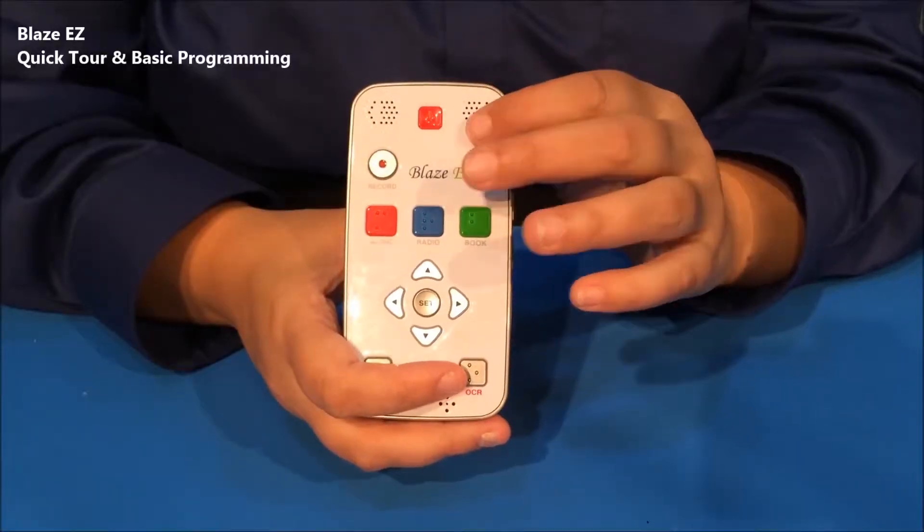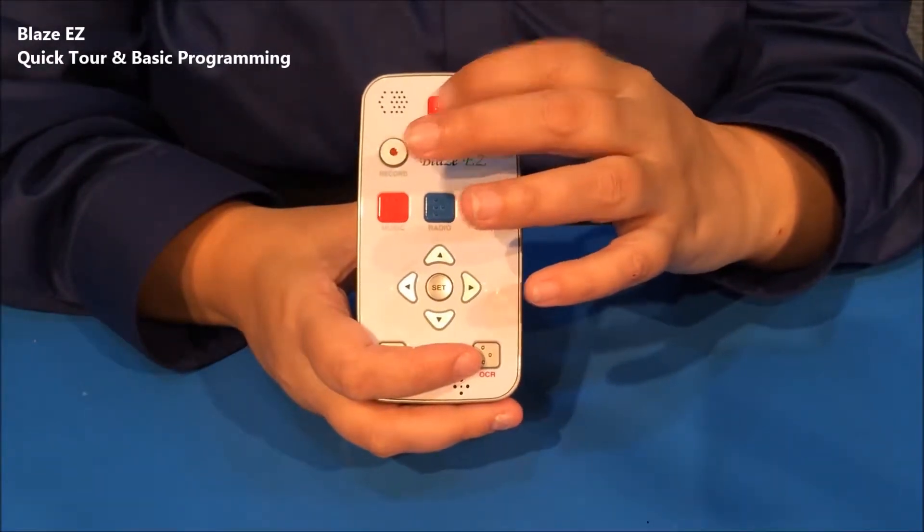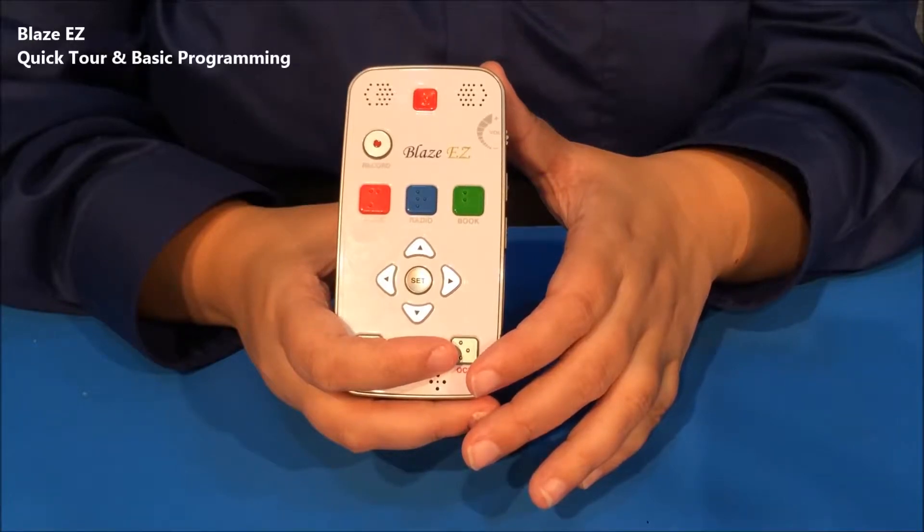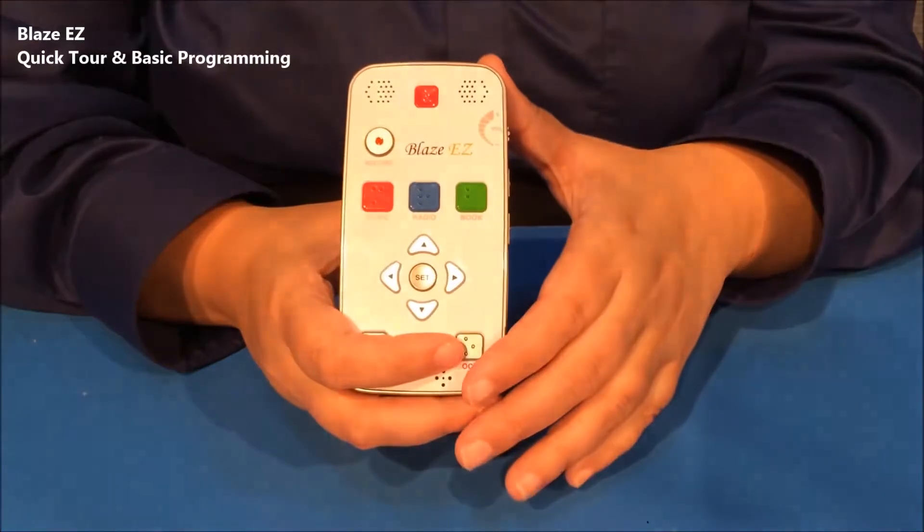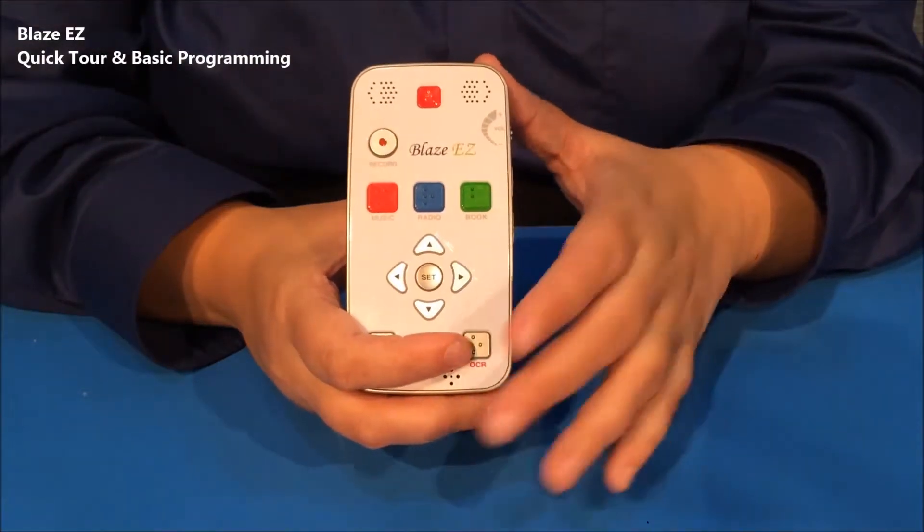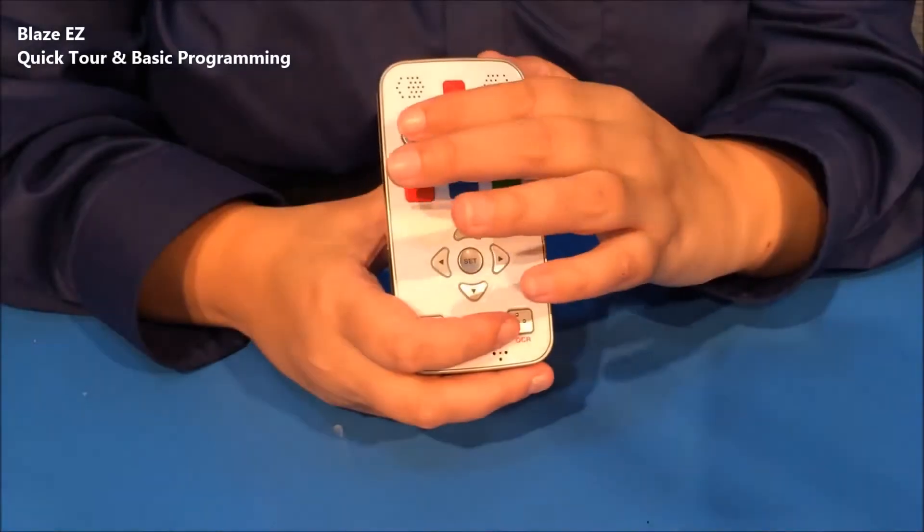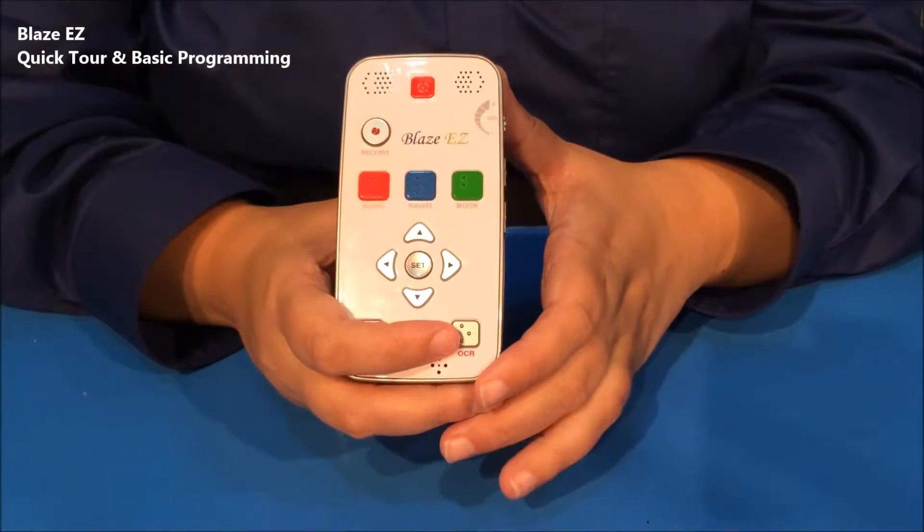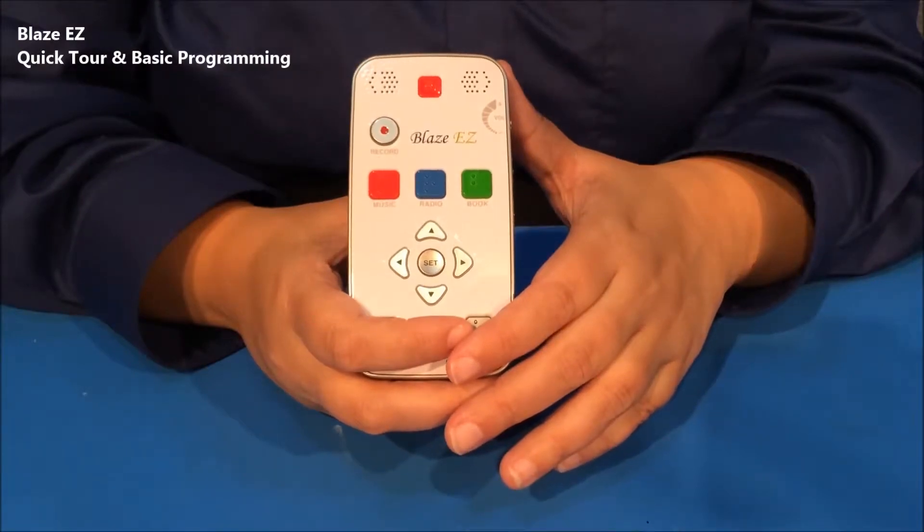At the top on the left and the right are the stereo speakers. In the center is a slightly depressed square ridged button, which is the power on button. You can press and hold it for several seconds to power it on and off. You can press it quickly to just get the time and date announced even when the unit is off. Below the power button and the speakers is a round button, which is the record button. You can press and hold it to start recording or just press it quickly to access previously recorded content.